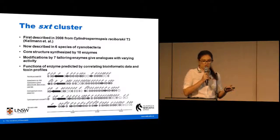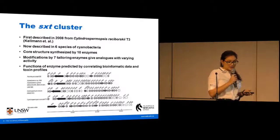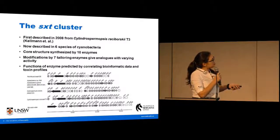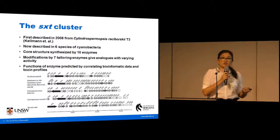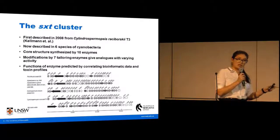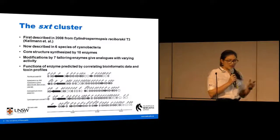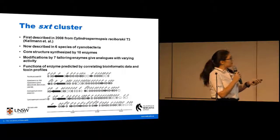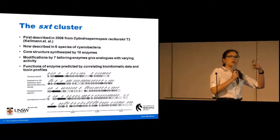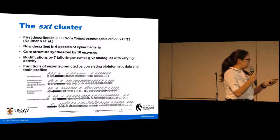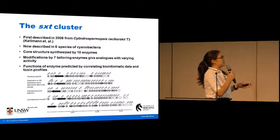What do we know of paralytic shellfish toxin biosynthesis? The biosynthetic cluster was first described in 2008 by our group, and now it's been found in six species of cyanobacteria. The biosynthetic cluster, named the SXT cluster, varies in size between all these different species, but also in gene presence and organization. The consensus is that there are the same 10 genes that produce the core structure of saxitoxin, and from there, this core structure is modified by either one or several tailoring enzymes that add different additions to functional groups to give rise to those analogues of varying activity, and each cluster will vary in what tailoring enzymes they have.